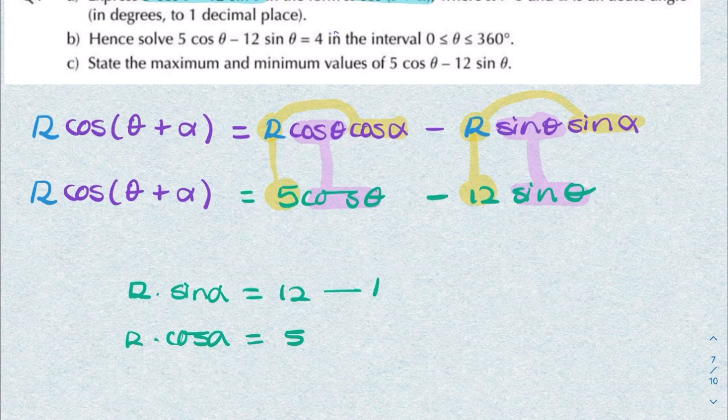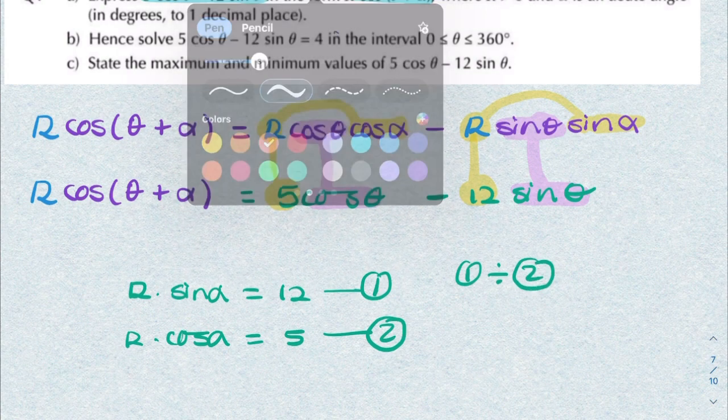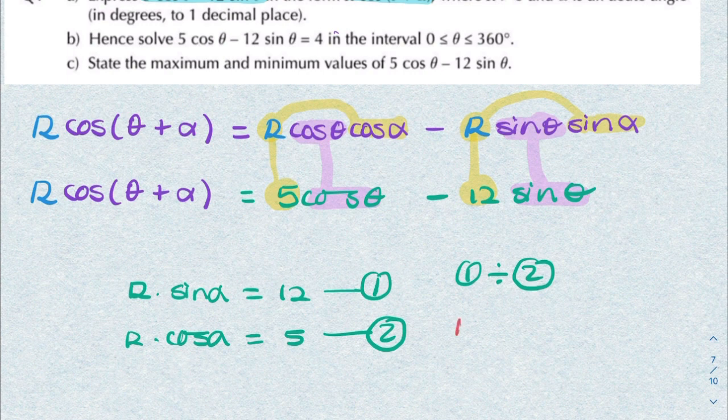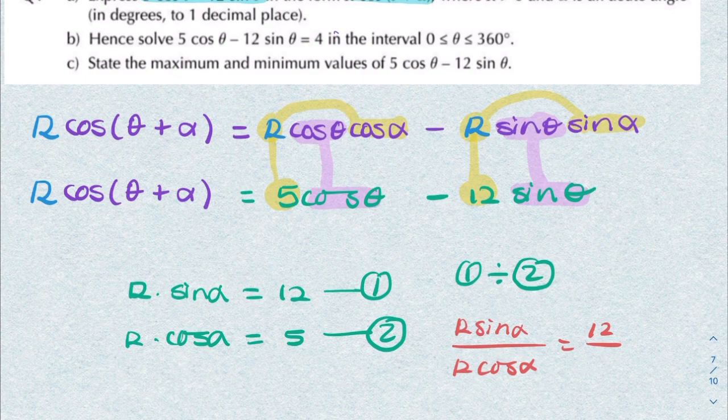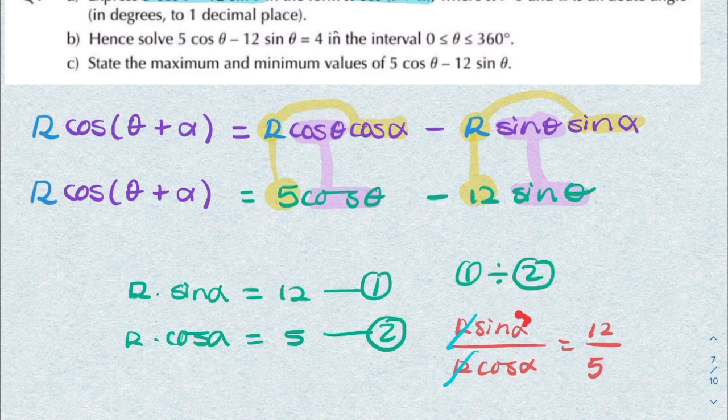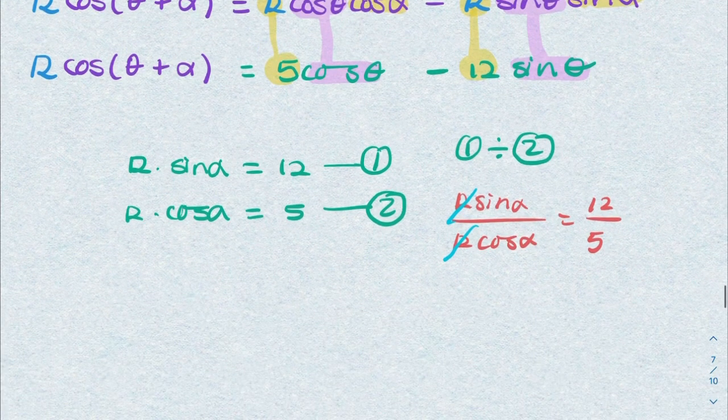If that's equation 1 and that's equation 2, if you divide equation 1 by equation 2, you end up with R sine alpha over R cosine alpha equals 12 over 5. The R's cancel out and sine over cosine gives you tan, so you can write this as